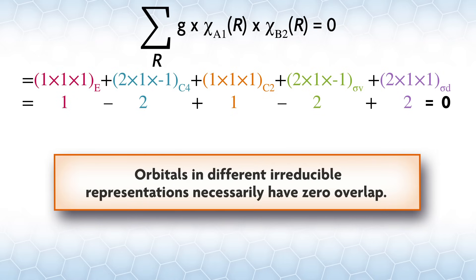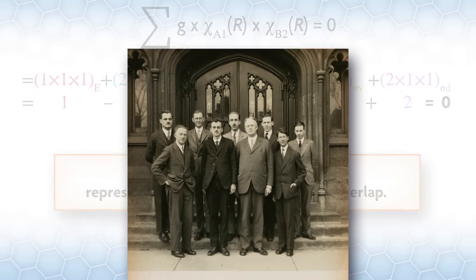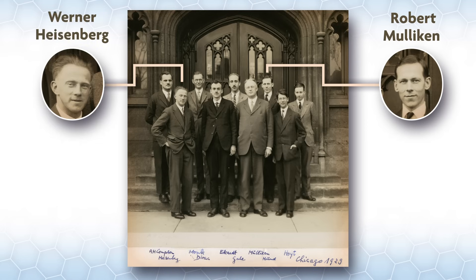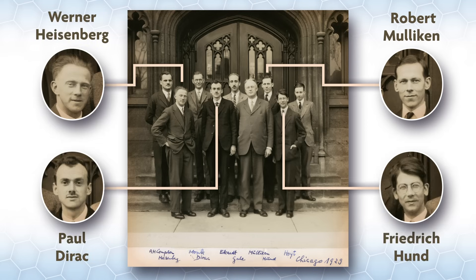The Mulliken symbols are a shorthand description of the irreducible representation named after Robert Mulliken, who won the Nobel Prize in Chemistry in 1966 for the development of molecular orbital theory. Here, he is third from the right in the back with other notable scientists including Werner Heisenberg, Paul Dirac, and Friedrich Hund.